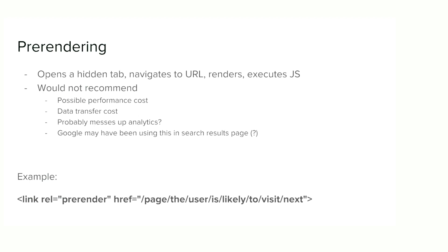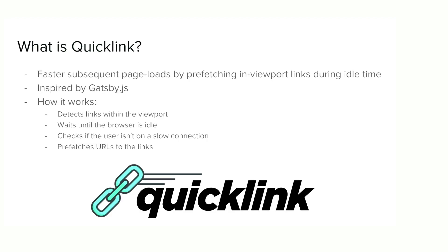There's also a thing called pre-rendering, which opens a hidden tab to a given URL, renders the page, and executes JavaScript. When you actually click that link, it swaps the hidden tab to the visible tab. I wouldn't recommend using this — it could cost users quite a lot if they're on a limited data plan, and it might mess up your analytics if it's based on page views since the page is rendered even if the user never navigates there. But it's good to know it exists.